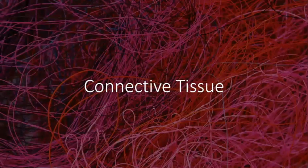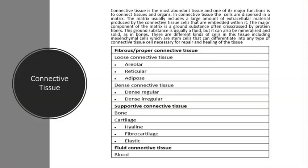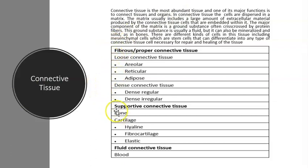Connective tissue is one of the most abundant tissues that we have in our body. There are multiple different tissues that are going to be included in this category, such as fibrous tissue, adipose tissue, cartilage, bone, and blood.